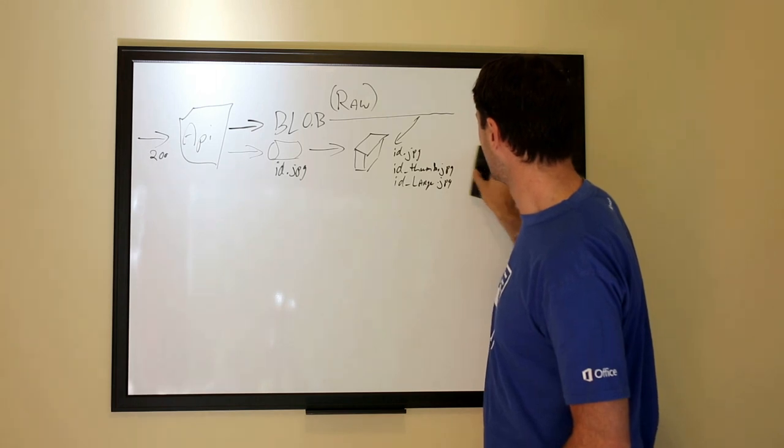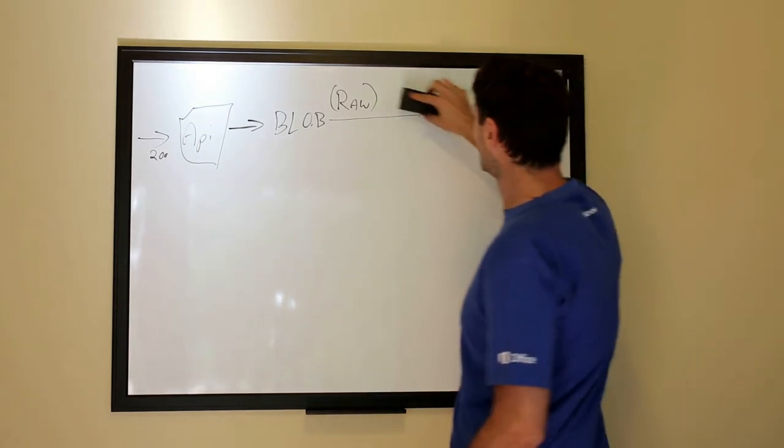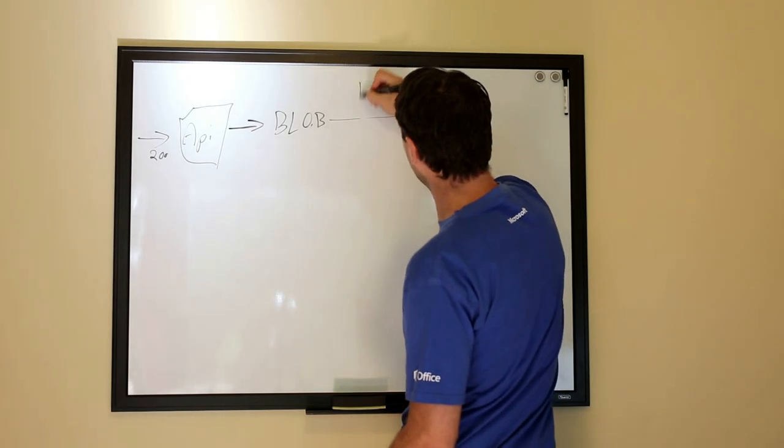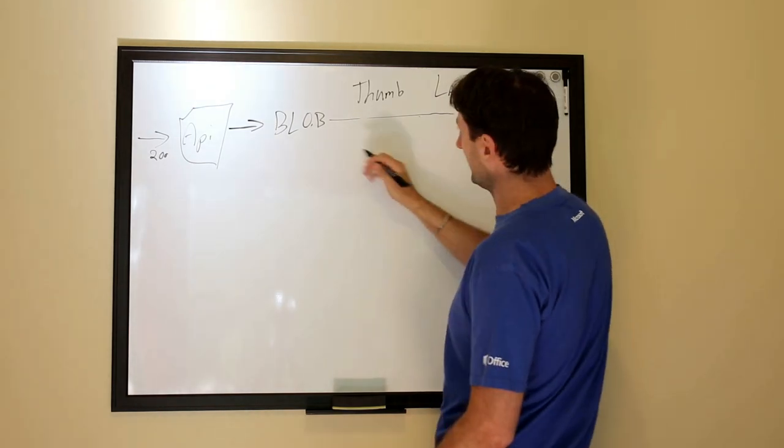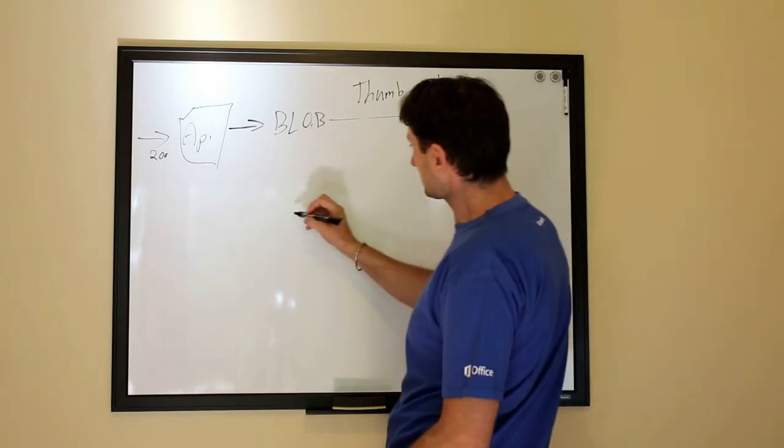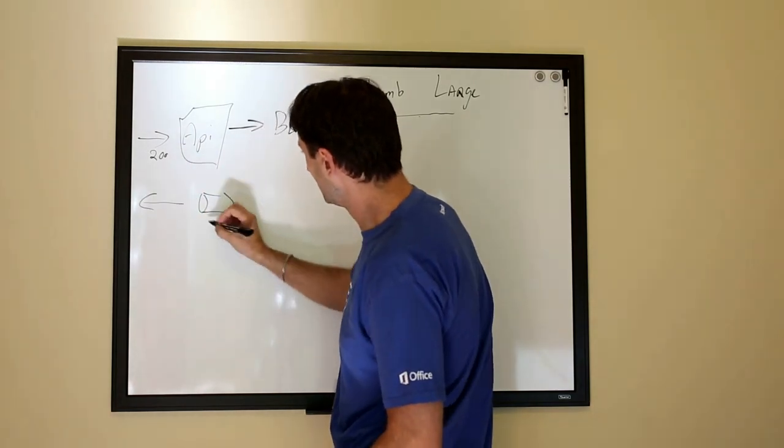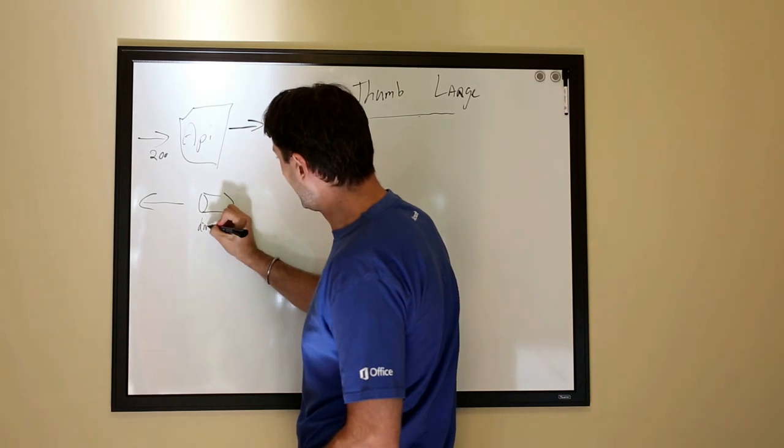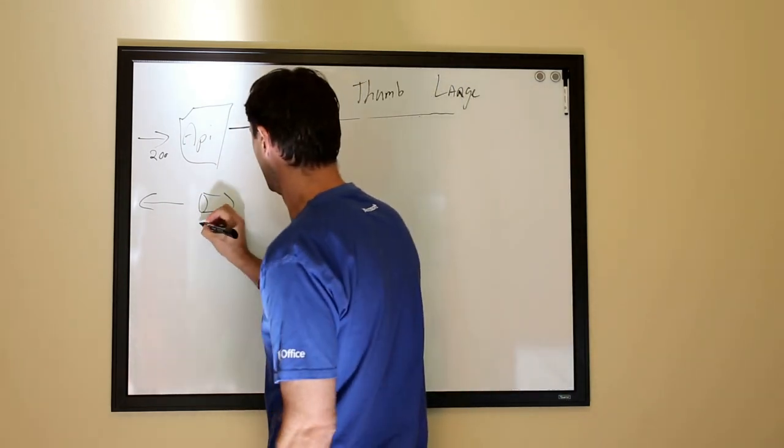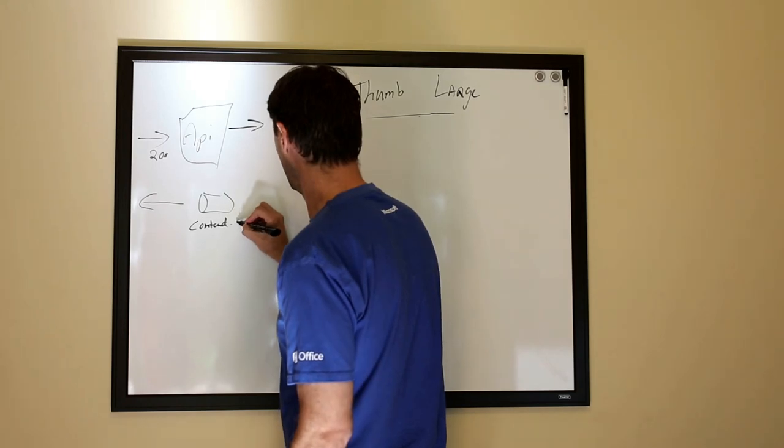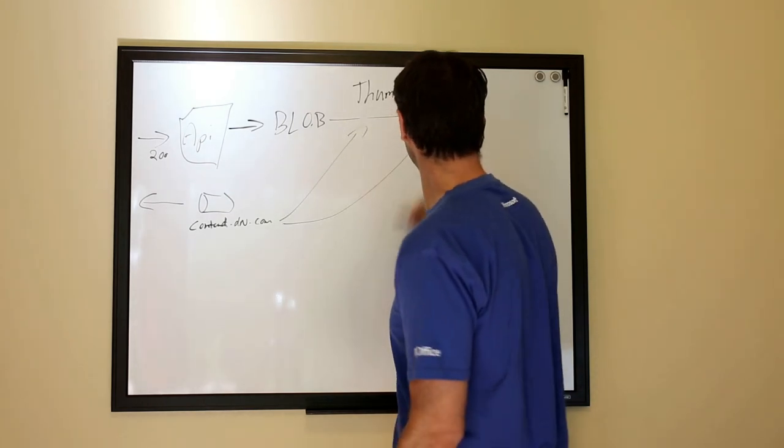Once all that background processing is done, you actually have a few things that you can do. Now we have stored the thumbnail and the large format. And then these are in Blob. The nice thing that you can do is actually now serve directly from Blob storage to your users. If you put your domain name, let's go content.yourdomain.com, you can actually reference that thumbnail in that large format.